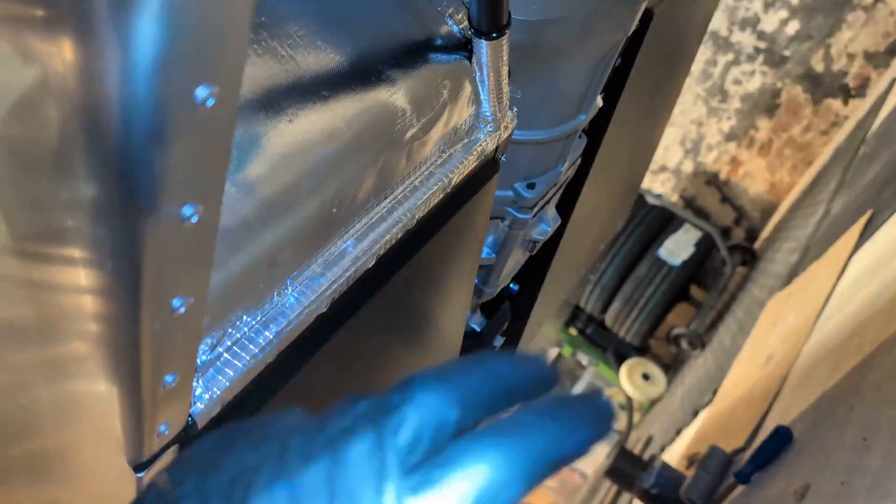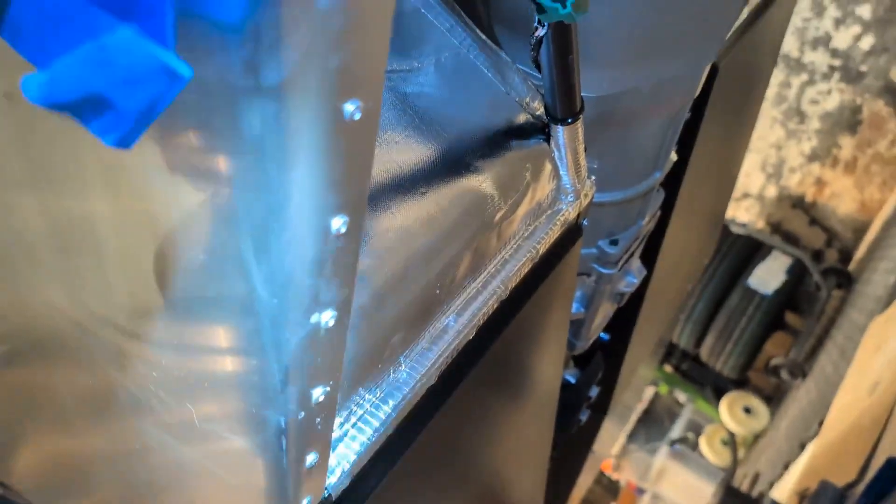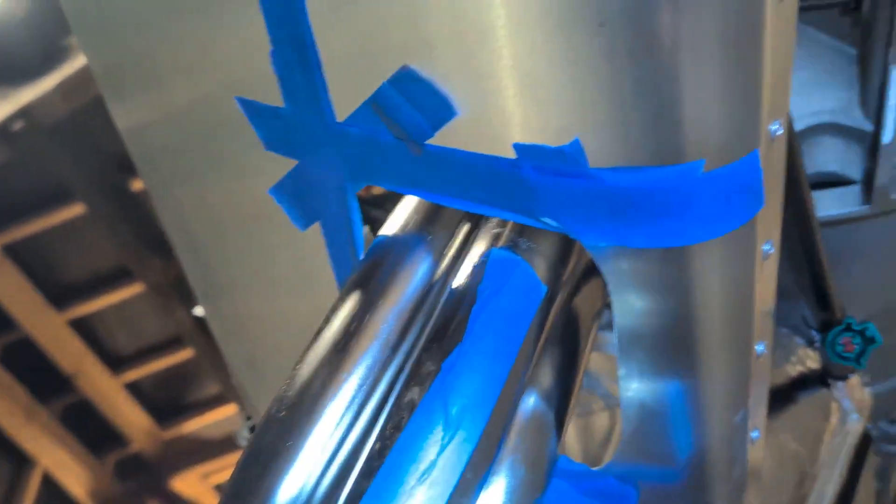Lambda sensor, obviously, goes in there. And the lambda connector is just here. So I'll probably run it against that chassis rail there. Try and protect it whilst I can. Sweet. Let's see what's next.